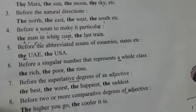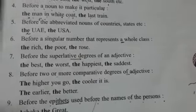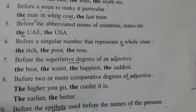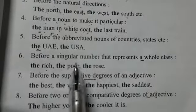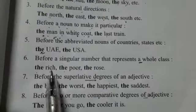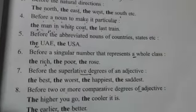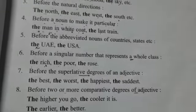Next is before a singular noun that represents a whole class. Us singular noun ke saath joh puri class ko represent kar raha ho. For example, 'the rich,' 'the poor' — yaha hum kisi ek rich ke baare mein nahi baat kar rahe, hum ameer logon ke baare mein baat kar rahe hain.